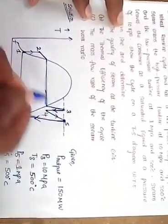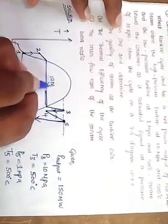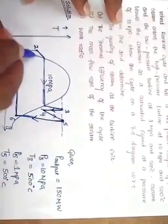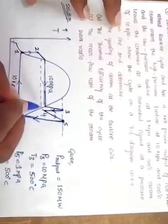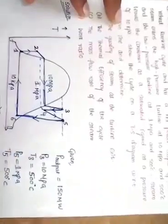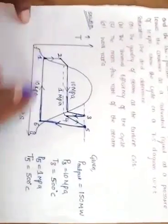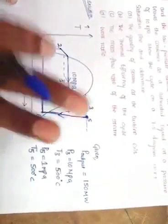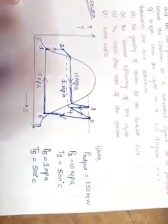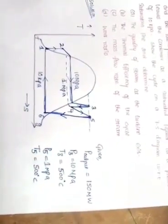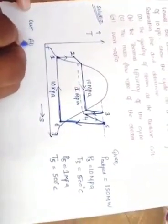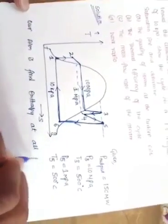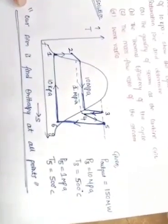On the T-S diagram, the 10 kPa pressure line is the condenser line, the 10 MPa line corresponds to processes 2 to 3, and the 1 MPa line is also a constant pressure line for the reheat process. This is the T-S diagram of the reheat Rankine cycle. Whenever you solve a Rankine cycle or any vapor power cycle, your main aim is to find the enthalpies at all points — that's it, then your problem will be solved.